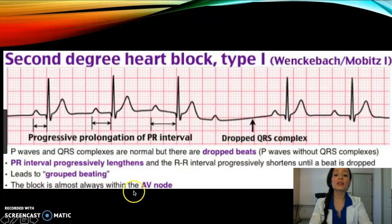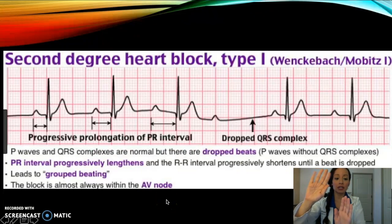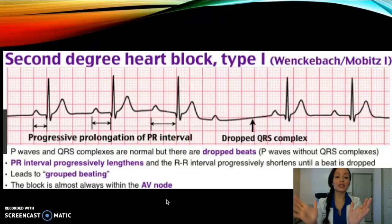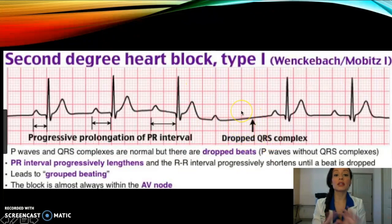The block is almost always within the AV node. Remember, the SA node is the pacemaker of the heart — it fires first, then the AV node fires. Because the AV node is responsible for the ventricles, when the ventricles aren't firing, we get a dropped QRS complex — since the QRS is the result of ventricular depolarization.